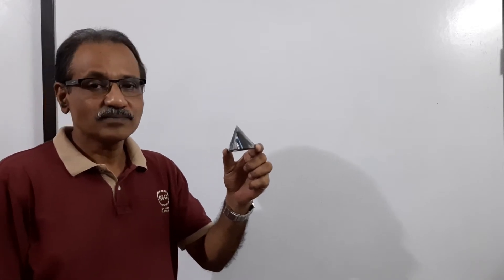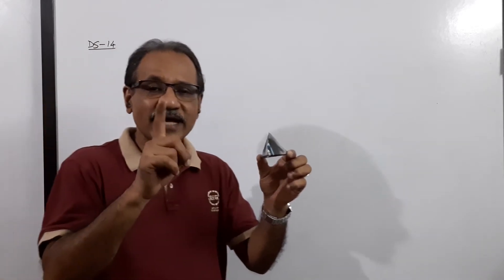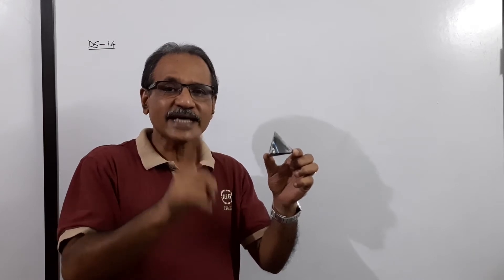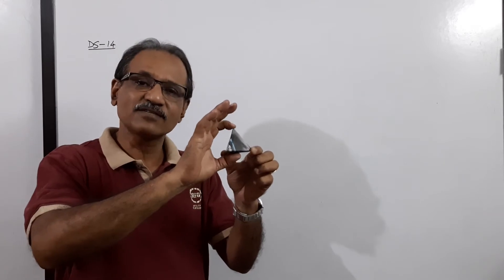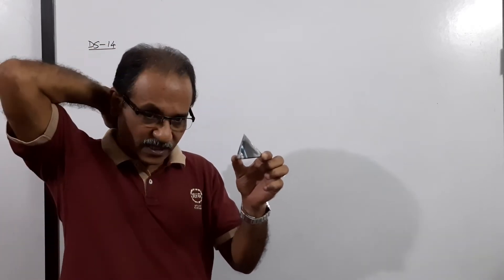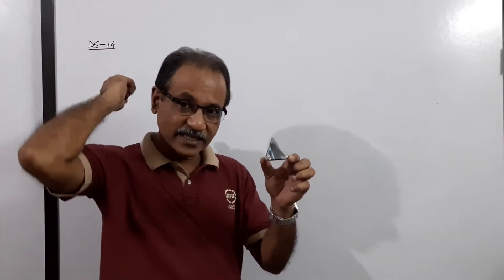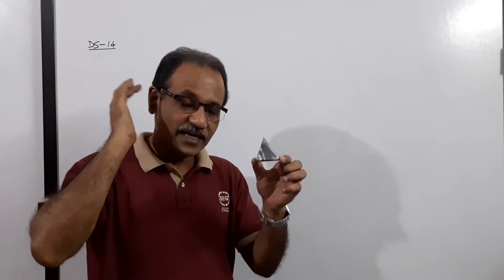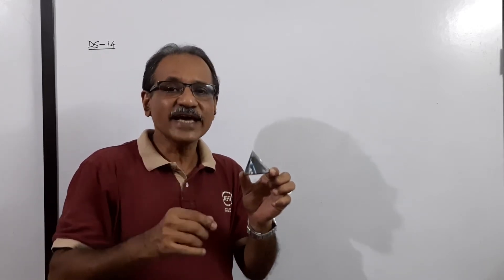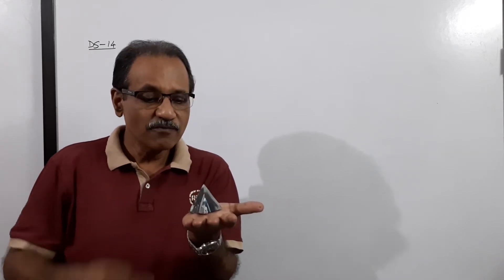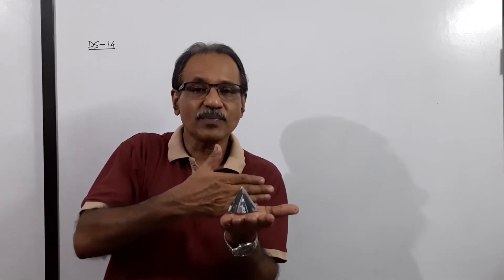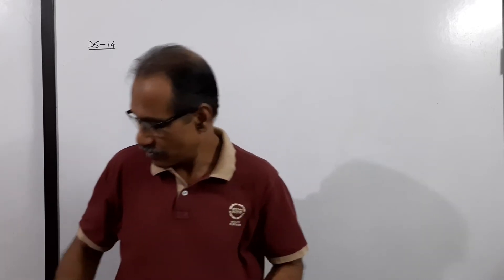A tetrahedron is specified by only one dimension: the side 'a'. The height is fixed once 'a' is given. In this case, the tetrahedron rests on HP on a triangular face with one side of that face parallel to VP. The elevation is an equilateral triangle.